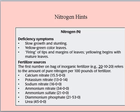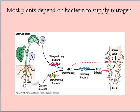Fertilizer sources. The first number on the back of an inorganic fertilizer refers to the amount of pure nitrogen per 100 pounds of fertilizer. Most plants depend on bacteria to supply nitrogen. The use of labelled phosphorus made it possible to establish that the movement of salts is faster with increased transpiration and slows down with a decrease in this process.